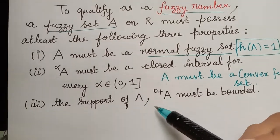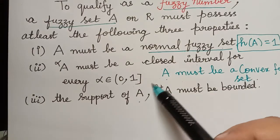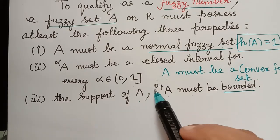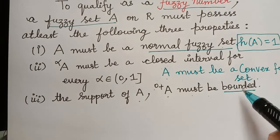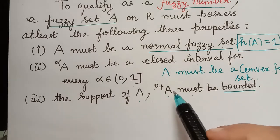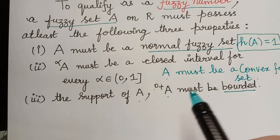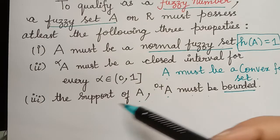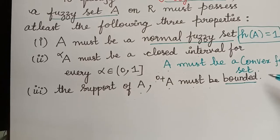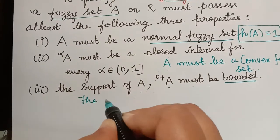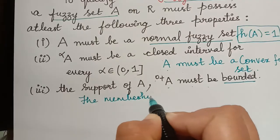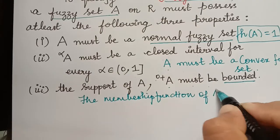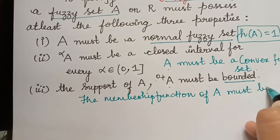The next condition required is the support of A, that is, the strong zero cut of A must be bounded. It must have an upper bound and a lower bound. If satisfied, then the fuzzy set A becomes a fuzzy number. This can also be stated as: the membership function of the fuzzy set A must be piecewise continuous.